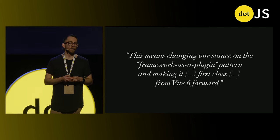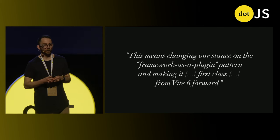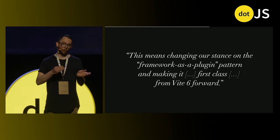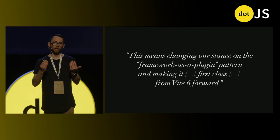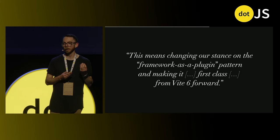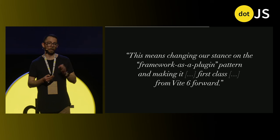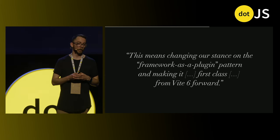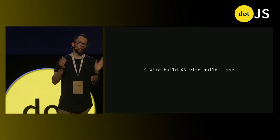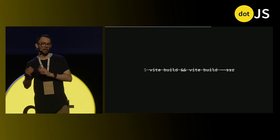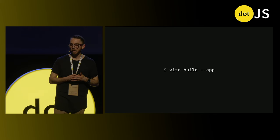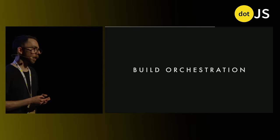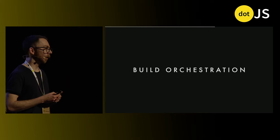This means changing their stance on the framework-as-a-plugin pattern and making it first class from Vite 6 forward. Vite historically wasn't looking at this direction of allowing you to ship a framework as simply a Vite plugin as we were trying to do. I'd like to think Remix did have some influence in this regard. So now, instead of running separate Vite build commands, you'd just run Vite build dash dash app, and that delegates to the builder behind the scenes to coordinate exactly what it means to build your application.